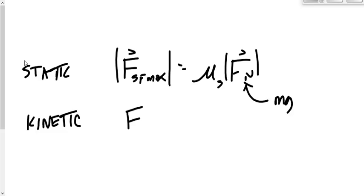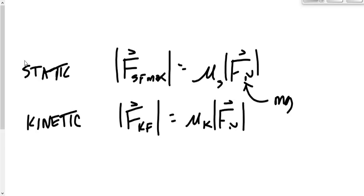Kinetic friction — the force of friction that acts once an object is already moving — looks almost the same equation. But when we solve for this, we're not solving for the maximum possible value; we're solving for the actual value. Static friction is just whatever force I'm pushing with, unless I push bigger than the maximum value. Kinetic friction we solve using mu times Fn, and it's going to be that value no matter how hard I push, as long as it's moving.